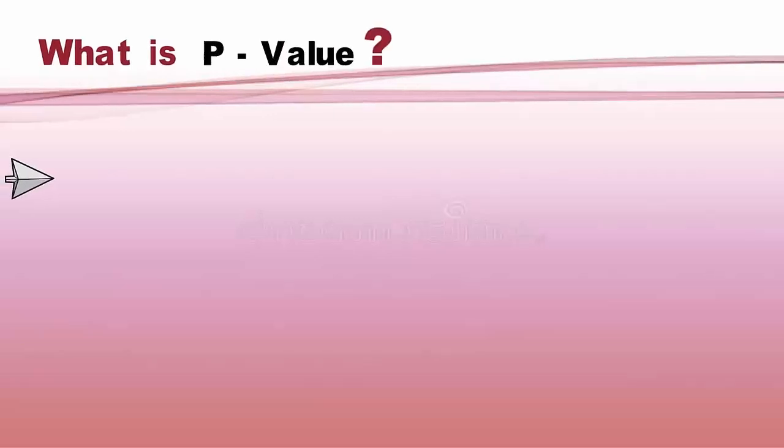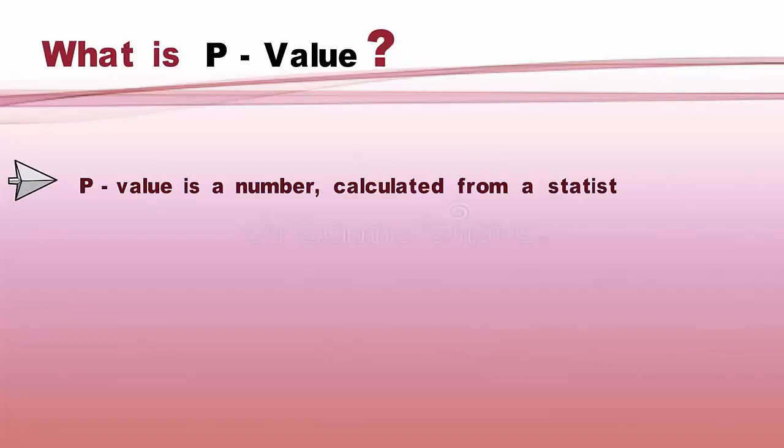First, we need to understand: What is P-value? The P-value is a number, calculated from a statistical test, that describes how likely you are to have found a particular set of observations if the null hypothesis were true.